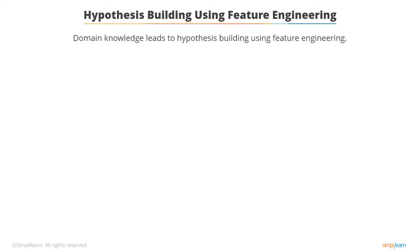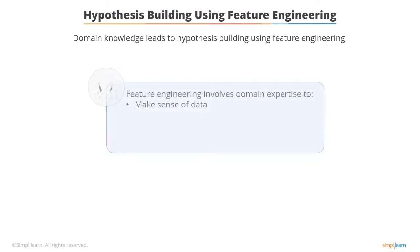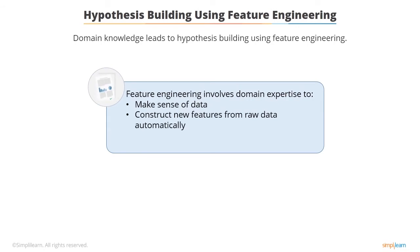Hypothesis building — a way to design models and predict the unknown — can be done using feature engineering. This includes identifying meaningful features based on data domain knowledge, automatically constructing new features from the raw data based on domain expertise, and constructing new features manually from raw data based on domain expertise.